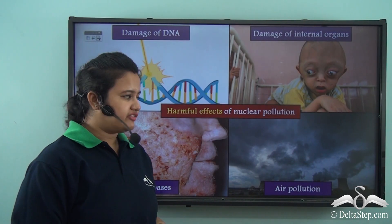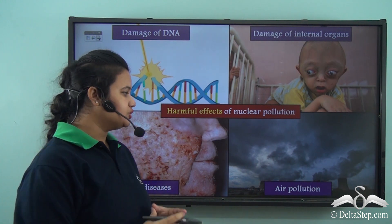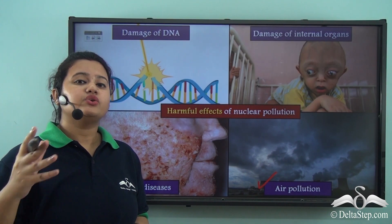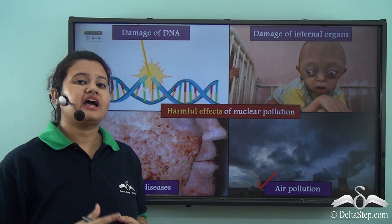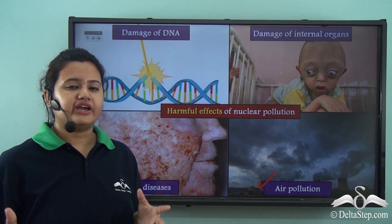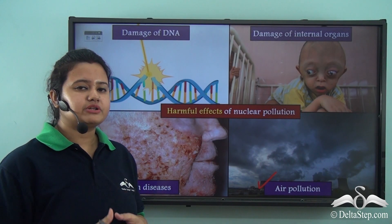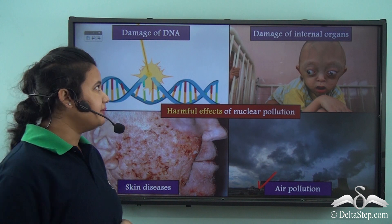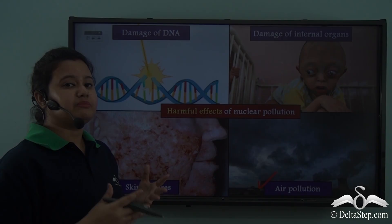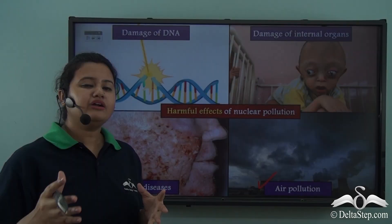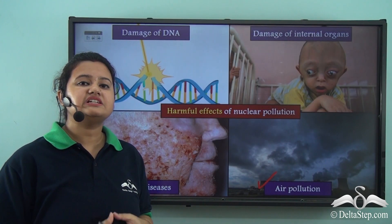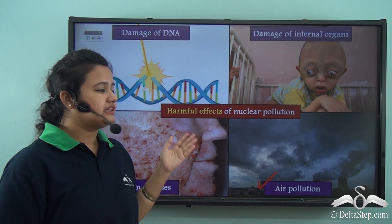Nuclear pollution not only affects human beings but may also lead to atmospheric pollution or air pollution. During heavy nuclear explosions, tons of dust particles and soot are released into the air, which may eventually lead to air pollution. So the harmful effects of nuclear pollution include: damage to DNA present in human cells, damage to internal organs of human beings, skin diseases, and atmospheric pollution.